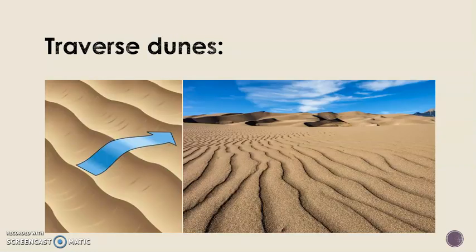Next, transverse dunes — the most common type of dunes. These are characterized by a single dip phase with sinuous crests. Note that crests in these dunes always contain coarse particles. They are usually seen in regions where there is a surplus supply of sand and ineffective winds.